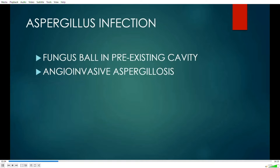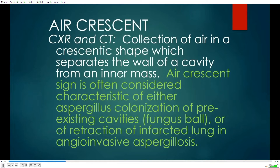The answer is aspergillus infection — that's certainly the most common cause of this sign. Aspergillus can be benign or just inflammatory; it's a fungus ball inside a pre-existing cavity, which may be a bulla or an old tuberculous cavity. But more serious is what is called angioinvasive aspergillosis, which we see usually in immunocompromised patients, particularly those that are neutropenic. The Fleissner Society definition is: a collection of air in a crescentic shape, which separates the wall of the cavity from an inner mass.